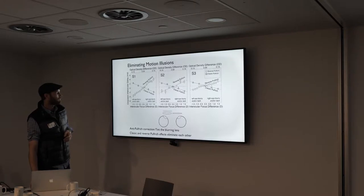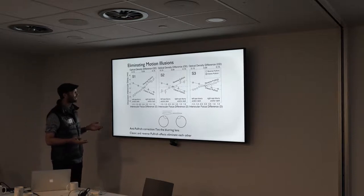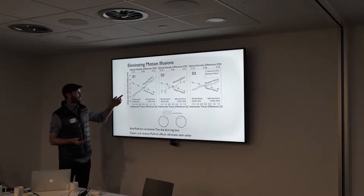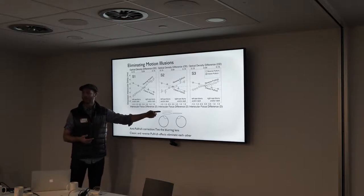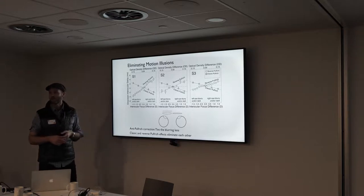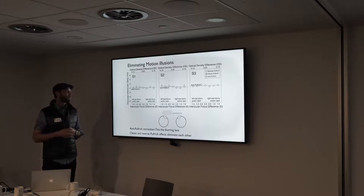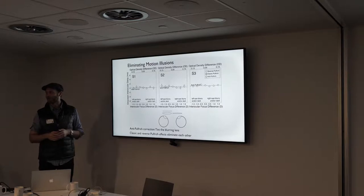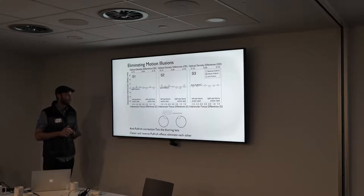It would be far better to just eliminate the illusions altogether. Looking at the plots, the solution is sort of obvious: if darkening one eye slows down processing and blurring that same eye speeds up processing, let's just put the two together — tint the blurring lens. If the logic is right, it should eliminate these effects, and indeed it does. This is our so-called anti-Pulfrich correction for monovision. We're currently trying to interest contact lens companies in this potential solution.